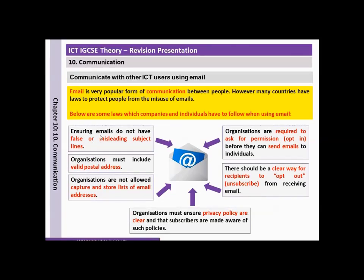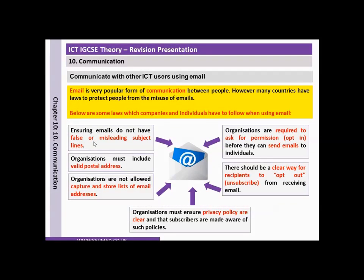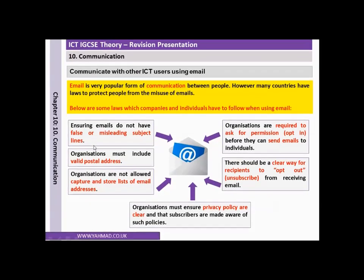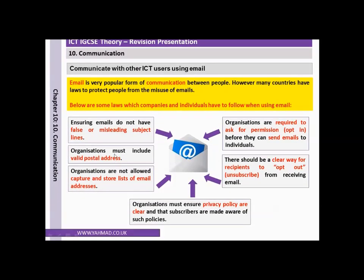The first law is ensuring emails do not have false or misleading subject lines. Organisations must include valid postal addresses. Organisations are not allowed to capture and store lists of email addresses. Organisations must ensure privacy policies are clear and that subscribers are made aware of such policies. There should be a clear way for recipients to opt out of receiving emails.